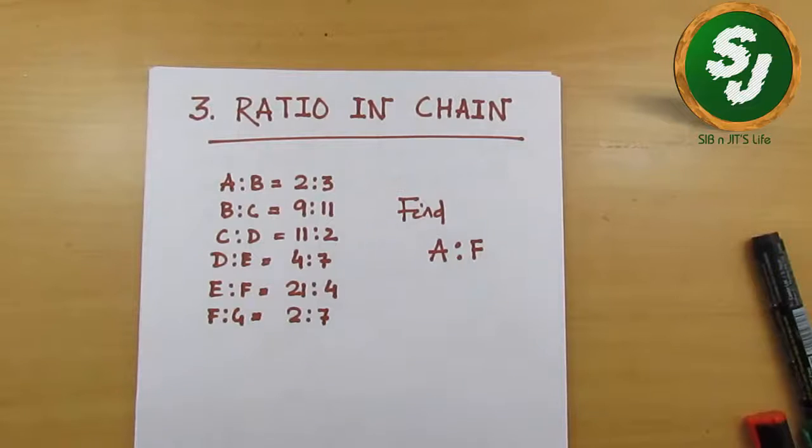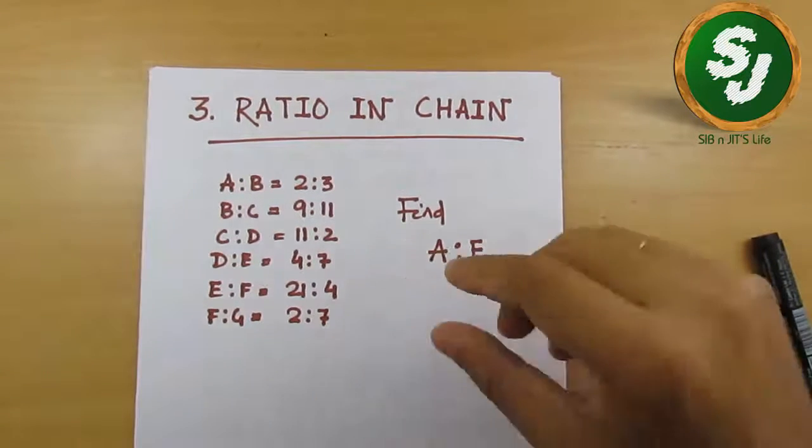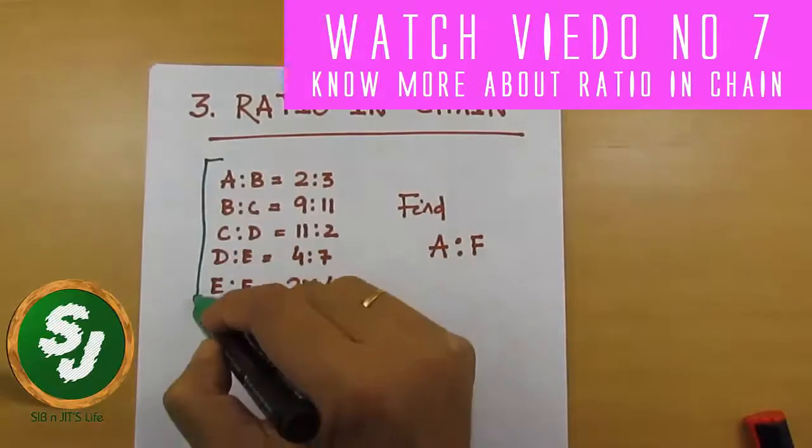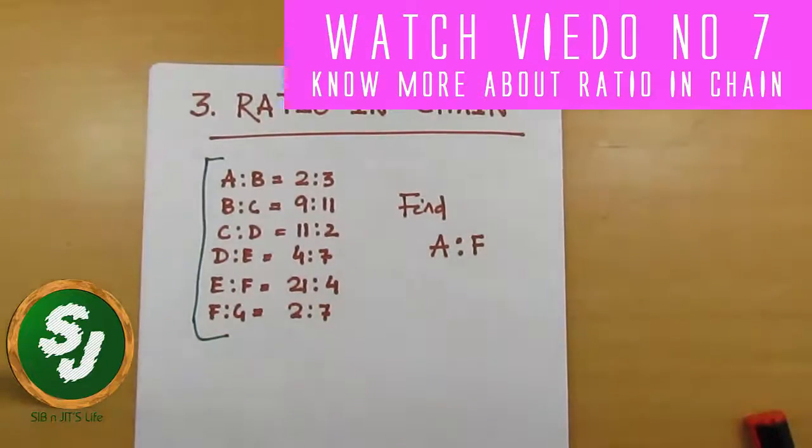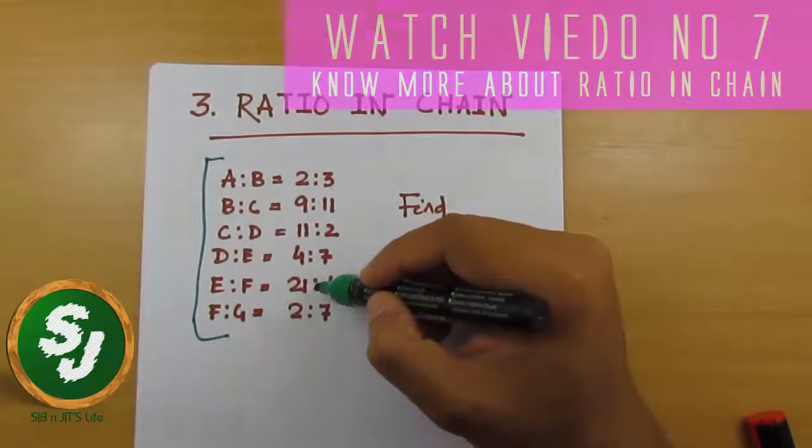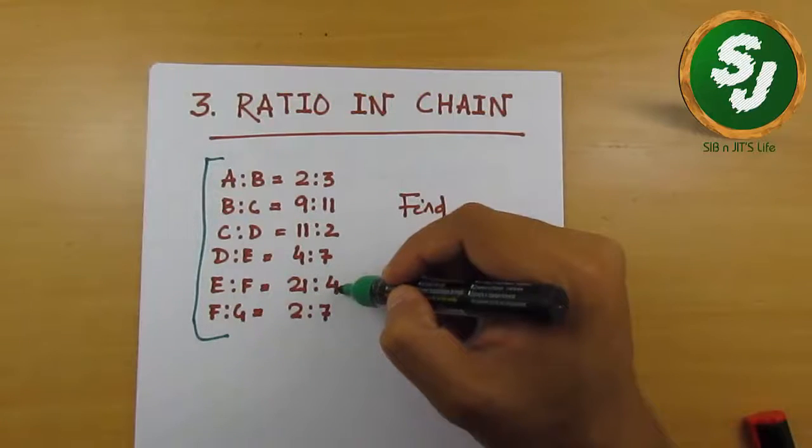For example, this kind of information will be given: A:B = 2:3, B:C = 9:11, C:D = 11:2, D:E = 4:7, E:F = 21:4, F:G = 2:7. And finally, the question will ask: find the value of A:F.